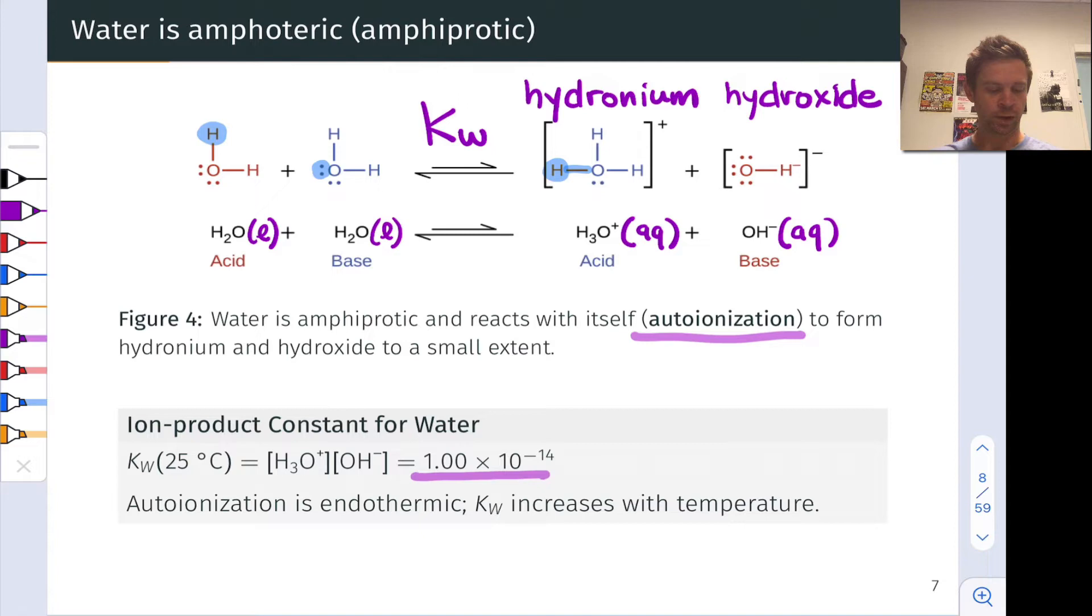One interesting point to note is that the self-ionization reaction of water is endothermic and Kw increases with temperature. It does have a weak temperature dependence, although 99 times out of 100, you'll use this value of 1 times 10 to the negative 14th. It's a value that's worth committing to memory for reasons we'll see when we talk about the relative strengths of acids and bases in a later section.